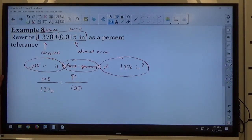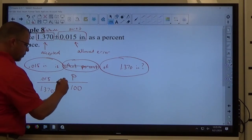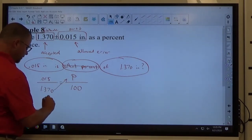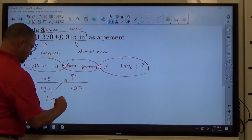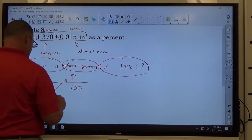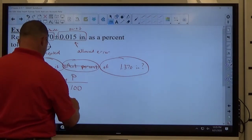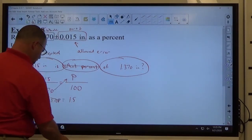0.015 is of 1.370 inches. Cross multiply: 1.370 times P equals 0.015 times 100, that's 1.5.